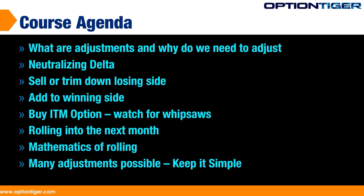When we talk of single options, it's easy to adjust. If we have a long call, we can either buy a long put or sell another option on the call side itself to negate the effects of the long call or the long put. When it comes to spreads, you already have two options — a short option and a long option — so now you're going to add either a third option, add on to one of the existing options, or take something off. It's a little bit more tricky.